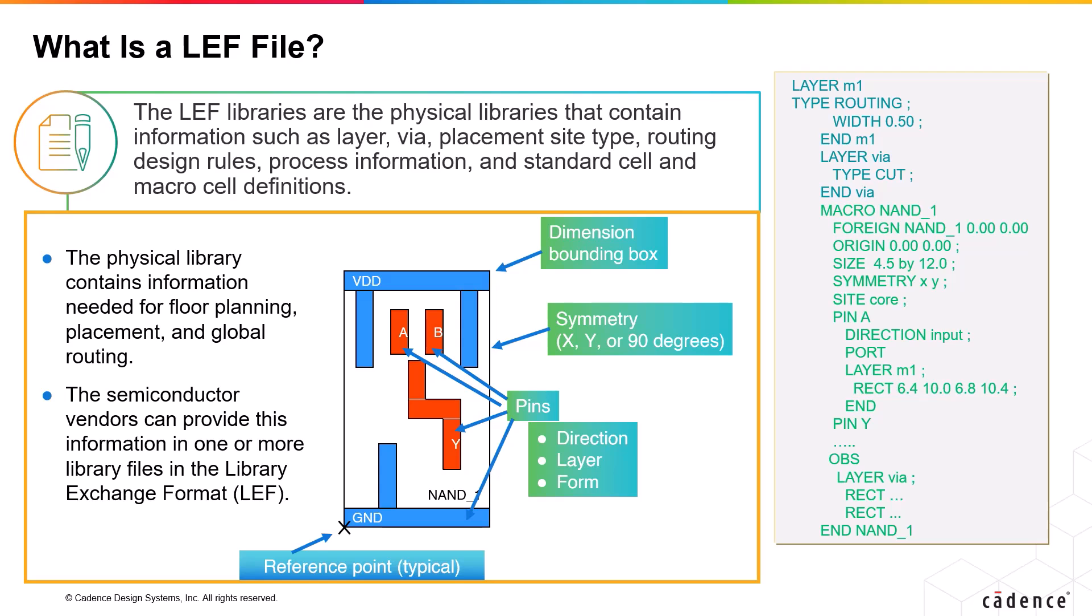For over-the-cell routing, the obstructions in the cell tell the router where it cannot route on a layer. The symmetry rule specifies how to rotate the cell: X, Y, or 90 degrees.